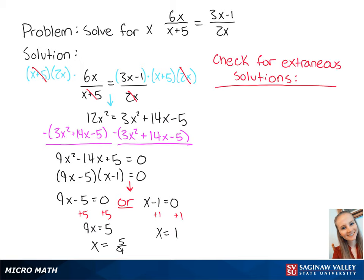Now we have to check for extraneous solutions. For a rational equation like this one, an extraneous solution is when one of the denominators is equal to 0. So we're going to create an equation where x plus 5 cannot equal 0.